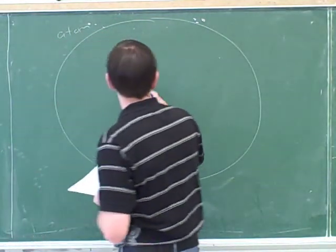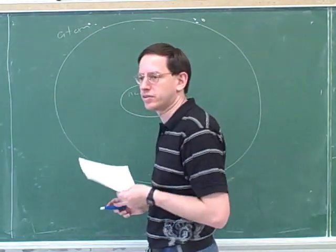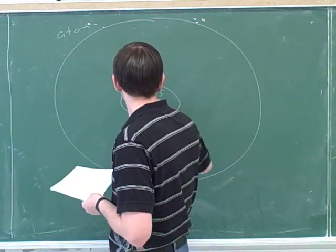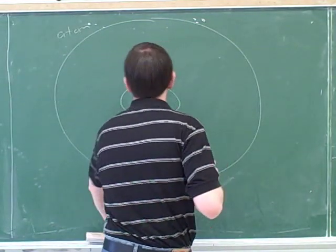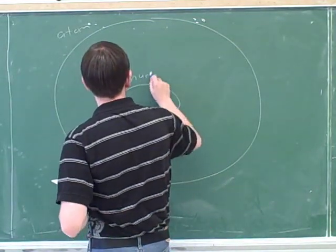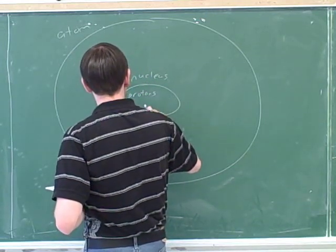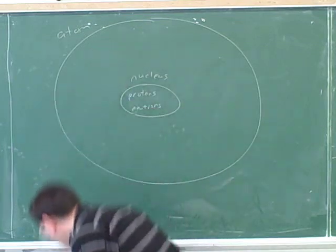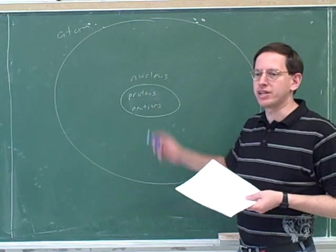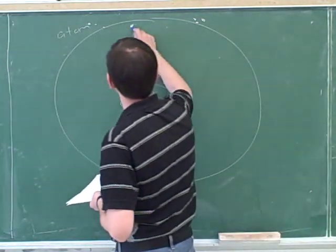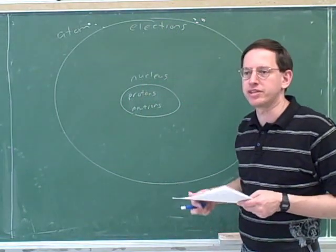So this is the atom. And this is the nucleus. The protons and the neutrons are in the nucleus, and then the electrons are, so to speak, orbiting around the nucleus.